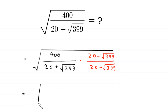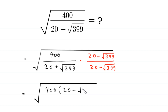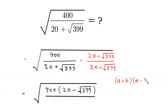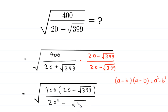The numerator becomes square root of 400 times 20 minus root 399. For the denominator, we use the algebraic identity A plus B times A minus B equals A squared minus B squared, so 20 plus root 399 times 20 minus root 399 becomes 20 squared minus root 399 squared.